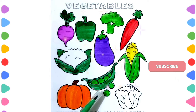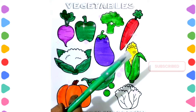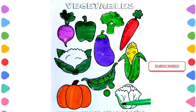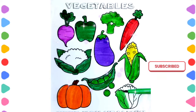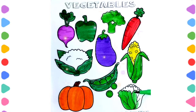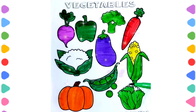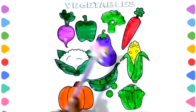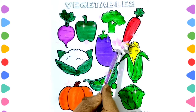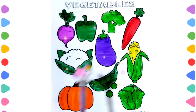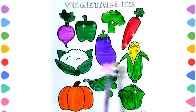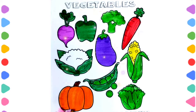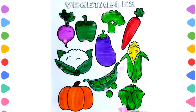Green color peas. Lettuce — green color. Turnip, capsicum, broccoli, carrot, cauliflower, eggplant, corn, pumpkin, peas, lettuce.